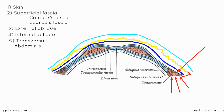After the transversus abdominis, there's a thin layer of fascia called the transversalis fascia. This lines the transversus abdominis and also lines the abdominal cavity, running just underneath it.